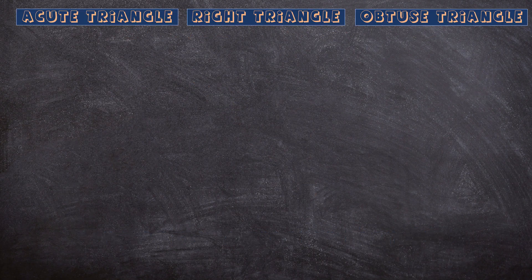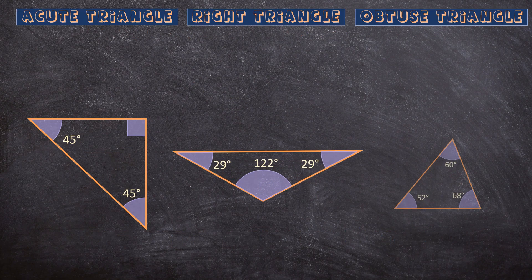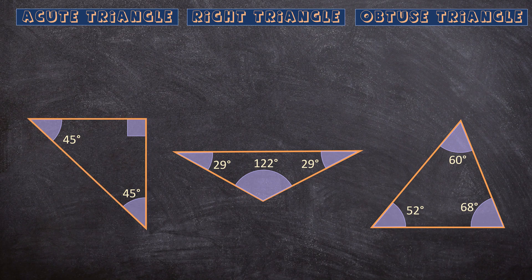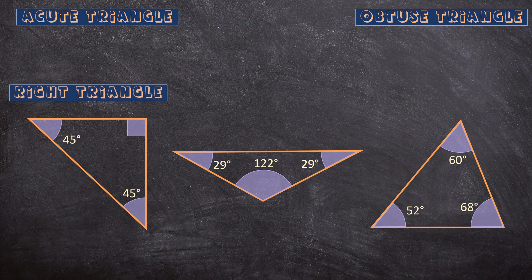Now let's look at these three triangles and classify them according to their angles. Let's first look at the triangle on the left. This triangle has one 90-degree angle, so this triangle is a right triangle.